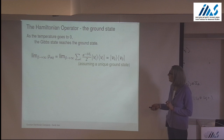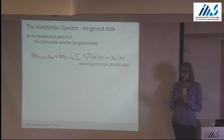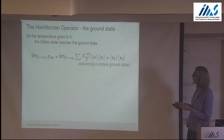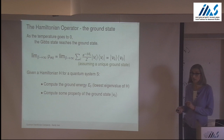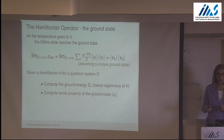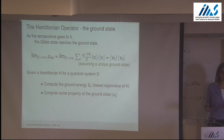What we'll mostly focus on is the situation where temperature goes to zero — beta goes to infinity. The probability of the lowest energy state dominates the distribution, and assuming a unique ground state, we converge to that unique ground state. The primary question I'll be talking about over the next three talks is: given some Hamiltonian for a quantum system, compute the ground energy. More often, you're interested in computing some property of the ground state itself.